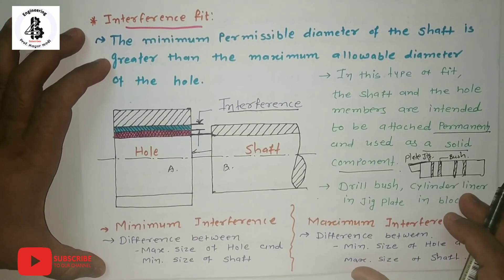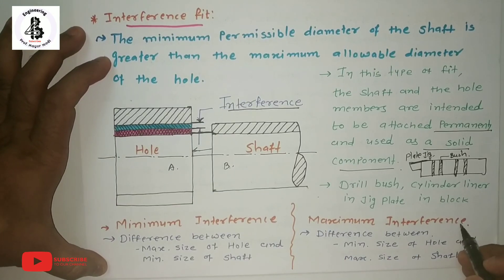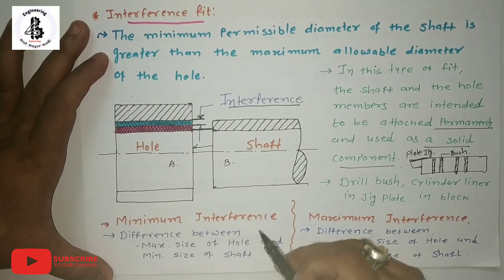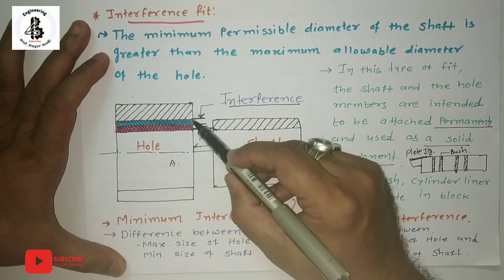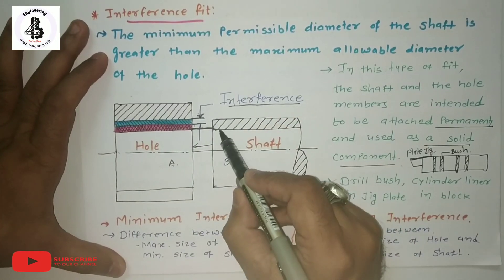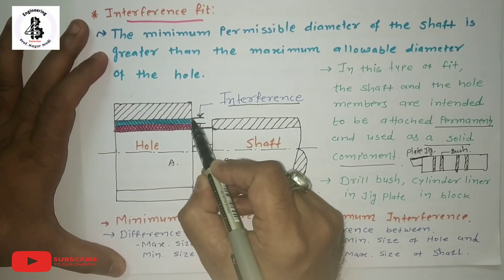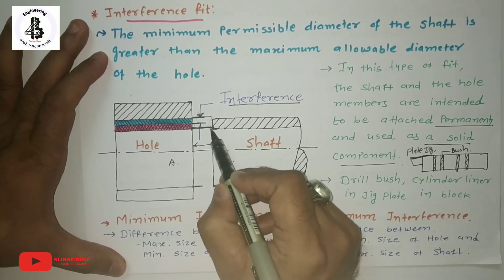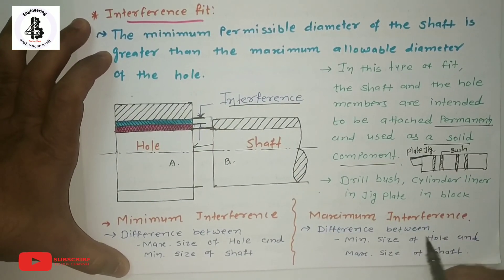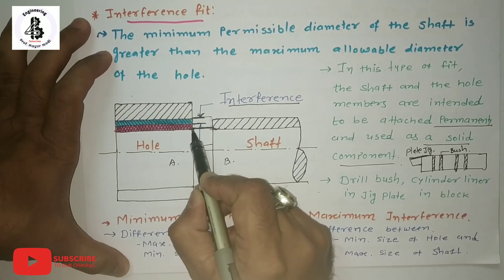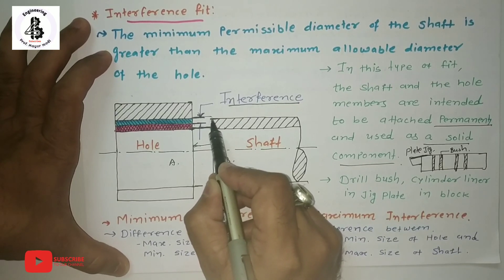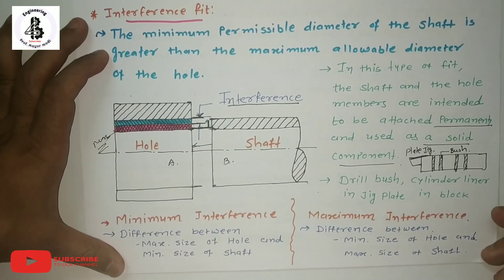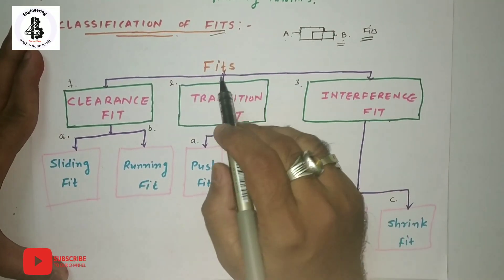There is also minimum interference and maximum interference. Minimum interference is the difference between the maximum size of the hole and the minimum size of the shaft. Maximum interference is the difference between the minimum size of the hole and the maximum size of the shaft. These are the conditions of interference fit according to the classification of fits, which has three types: clearance fit, transition fit, and interference fit.